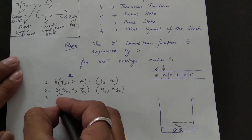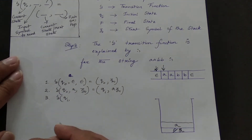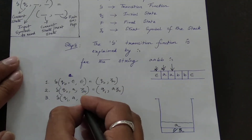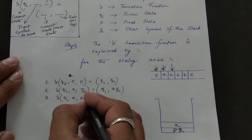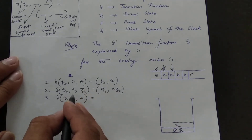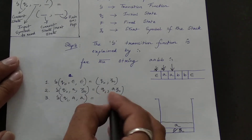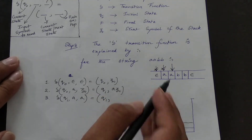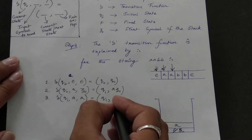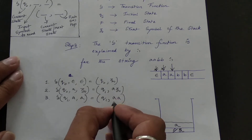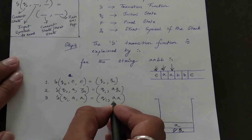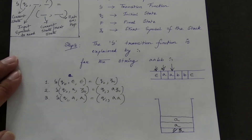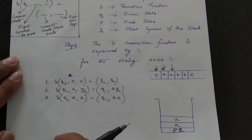Step 3: Delta(q1, a, a) = (q1, aa). The current state is q1, the next input symbol is again 'a', and the top of the stack is 'a'. Since both elements being read are the same, the state remains q1. We continue pushing 'a', so the stack now has two a's on top.